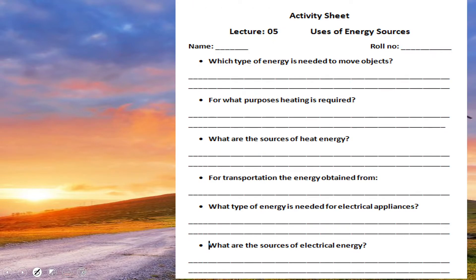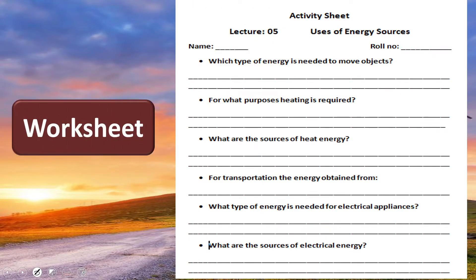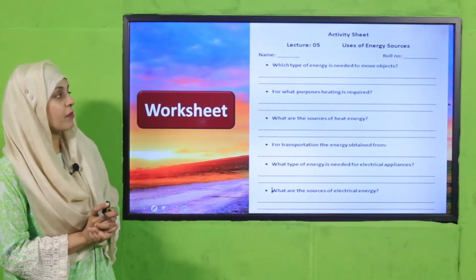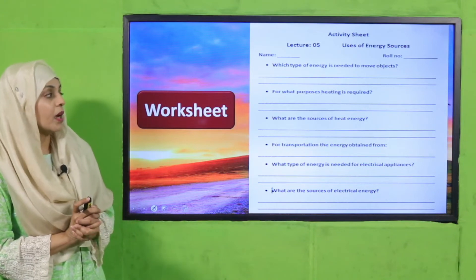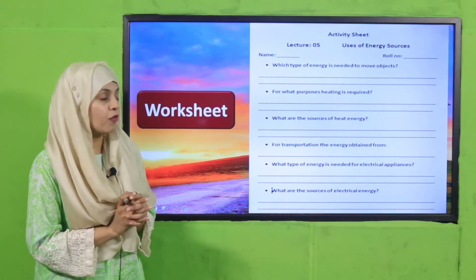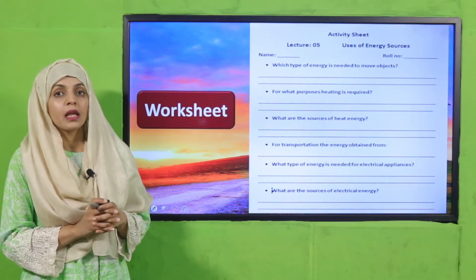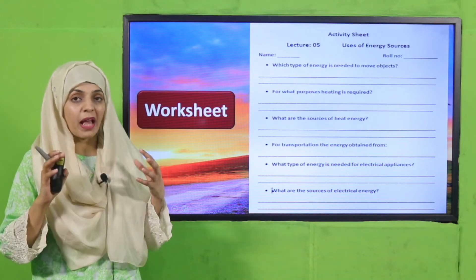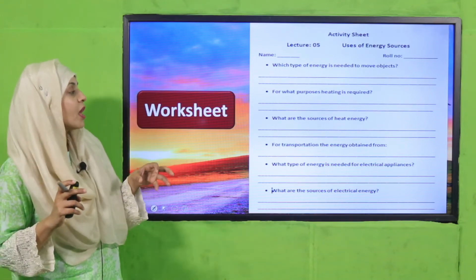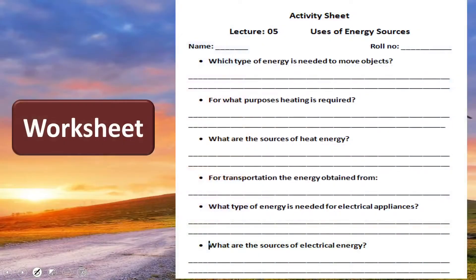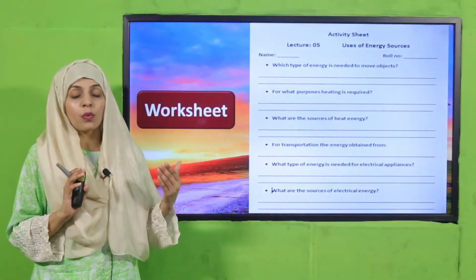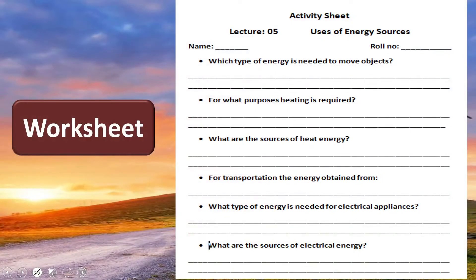Now is the time for practice. You can download this worksheet from the description box below this video, or get it in print form from your teacher. Write down your name and roll number and answer the questions: Which type of energy is needed to move objects? For what purpose is heating required? What are the sources of heat energy? For transportation, energy is obtained from what? What type of energy is needed for electrical appliances and what are its sources? You can take help from your book, pause and rewatch the video.